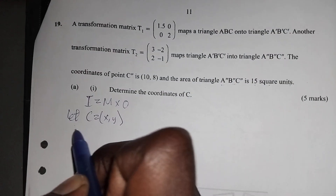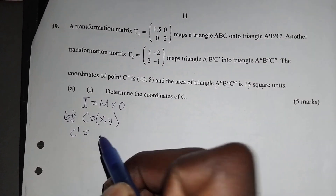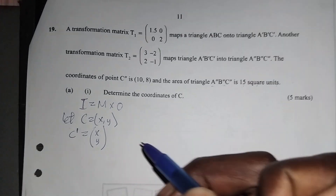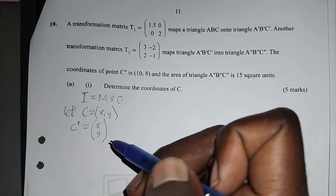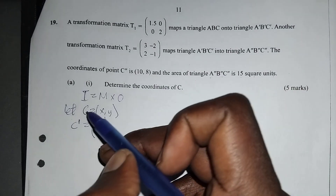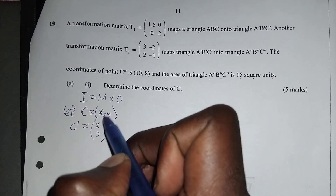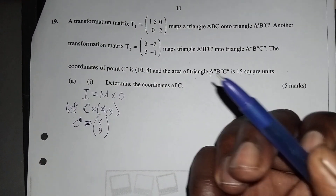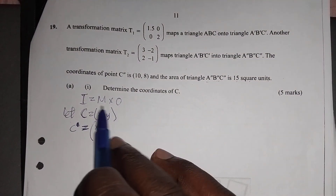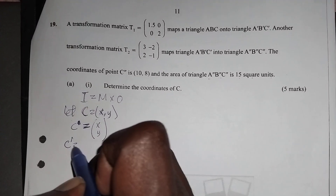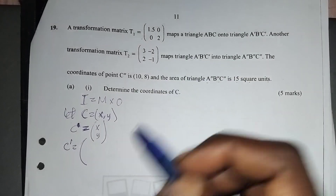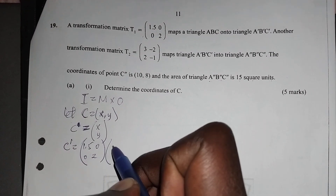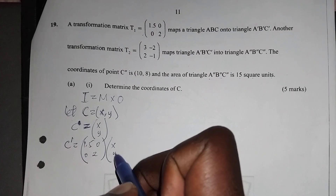To find C'', we first apply T1 to C. So C' equals the matrix T1, which is [1.5, 0; 0, 2], multiplied by the object C, which is (X, Y).